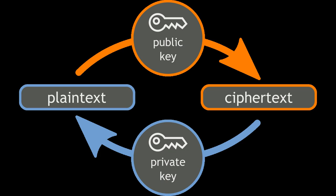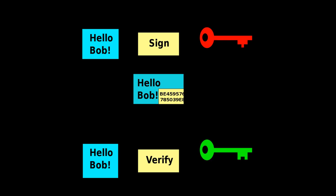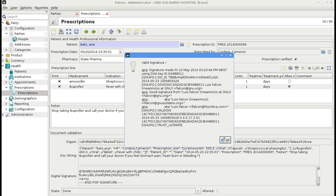By contrast, in a public key system, the public keys can be disseminated widely and openly, and only the private key needs to be kept secure by its owner. Two of the best-known uses of public key cryptography are: public key encryption, in which a message is encrypted with a recipient's public key and cannot be decrypted by anyone who does not possess the matching private key; and digital signatures, in which a message is signed with the sender's private key and can be verified by anyone who has access to the sender's public key.